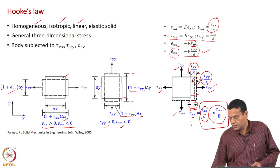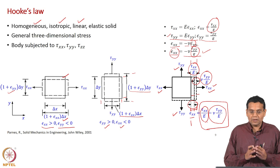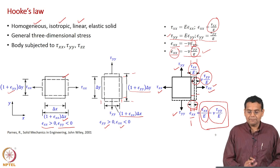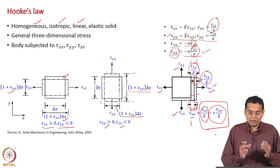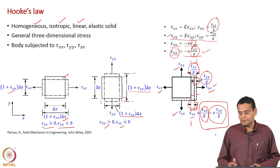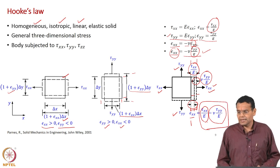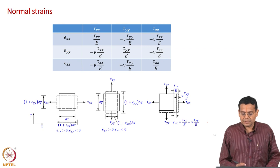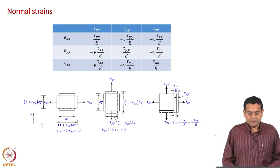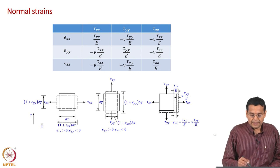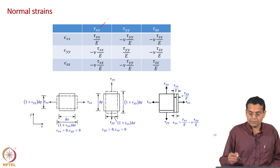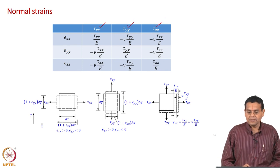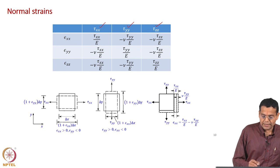In terms of equations, the effective normal strain along x equals tau_xx / E minus nu * tau_yy / E. We have considered a body subjected to both tau_xx and tau_yy and determined the normal strain along x. Now let us discuss the summary table.